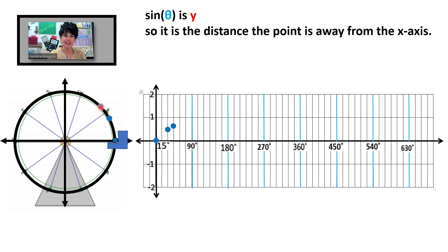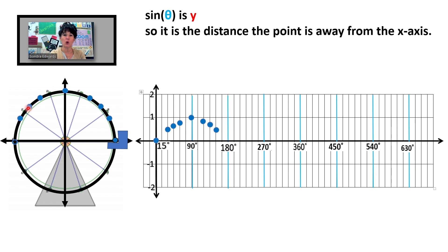By the time we get to 45 degrees, we are at about 0.8. At 60 degrees, about 0.9 distance off the x-axis. When we're at the very top of the Ferris wheel — the highest we'll ever be — we are 1 away from the x-axis, so the height of the chair is 1. The chair continues, and at about 120 degrees we have a height of 0.9. By the time we reach 180 degrees we are back on the x-axis, so height is 0.